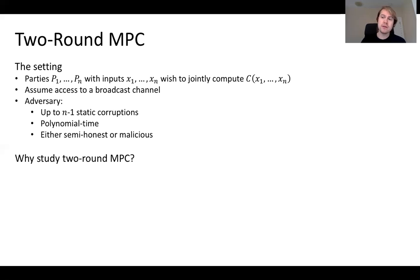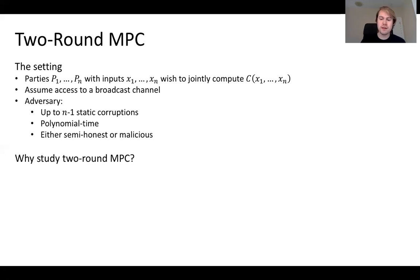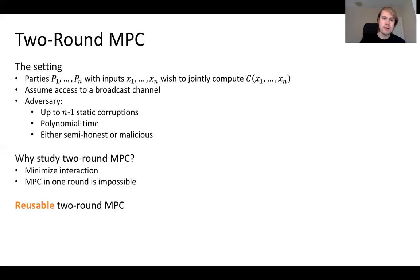Why study two-round MPC? Interaction, along with communication complexity and computational complexity, is one thing you might want to optimize for in MPC. Two-round MPC represents the best you can do in terms of minimizing interaction, because it's been known for a while that one-round MPC is impossible.